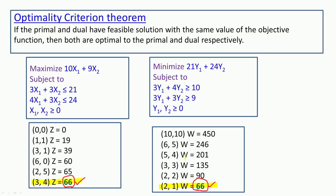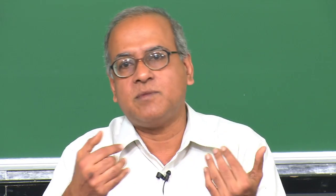By the weak duality theorem, if we can find a feasible solution to the primal and a feasible solution to the dual with the same objective function value, then they are both optimal. The optimality criterion theorem is the first step in relating the optimum solutions to the primal and dual. If we are not finding equal solutions, how do we relate the optimum solution to the dual? That aspect we will see in the next class.